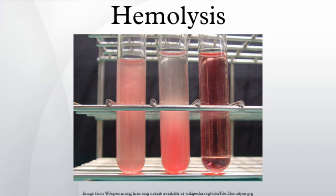Beta-hemolytic species, including S. pyogenes and S. agalactiae, completely rupture the red blood cells. Gamma-hemolytic, or non-hemolytic, species do not cause hemolysis and rarely cause illness. The genus Enterococcus includes lactic acid bacteria formerly classified as gamma-hemolytic group D in the genus Streptococcus.